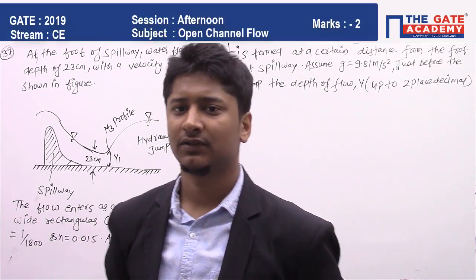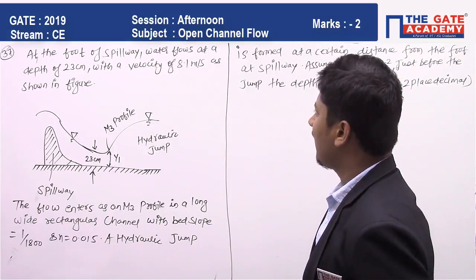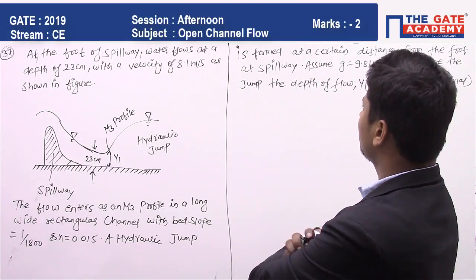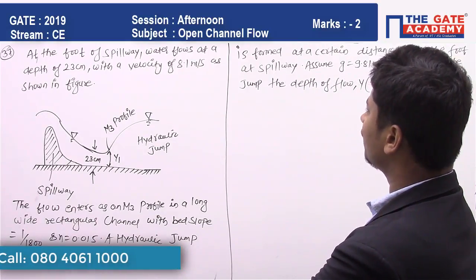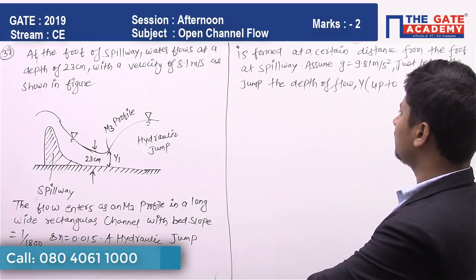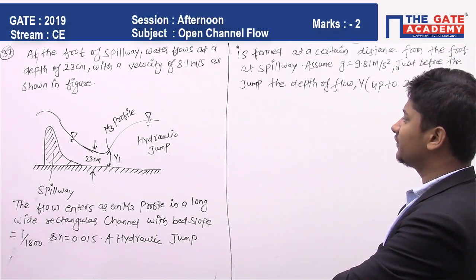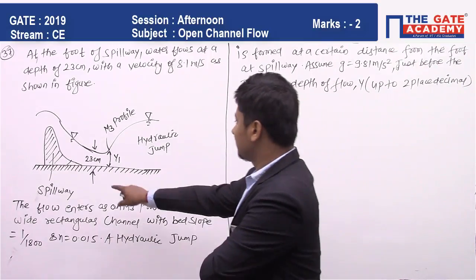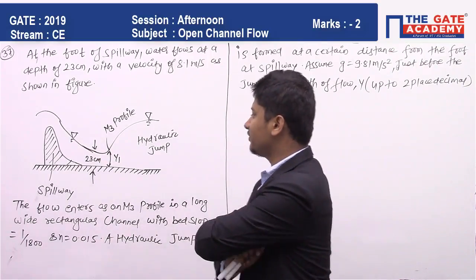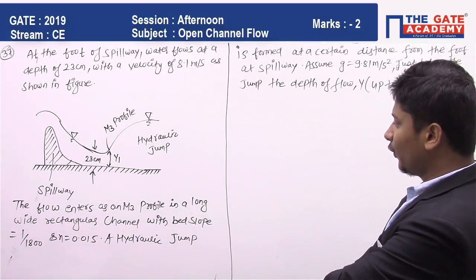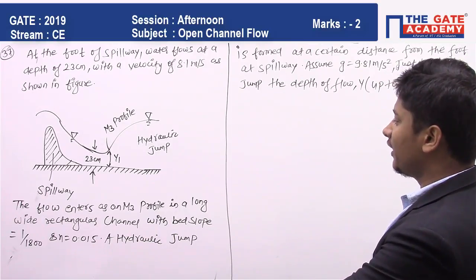The question is: At the foot of a spillway, water flows at a depth of 23 centimeters with a velocity of 8.1 meters per second as shown in the figure. You can see the depth of water is 23 centimeters.